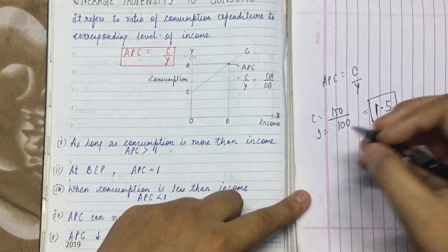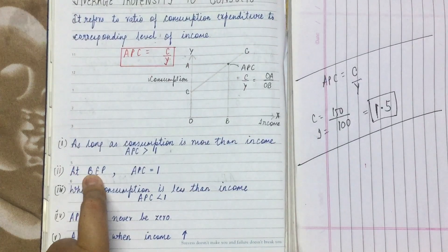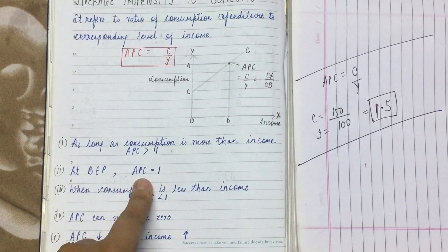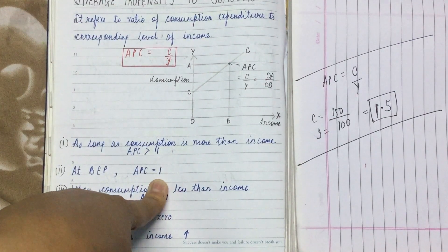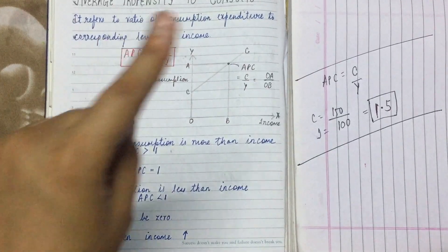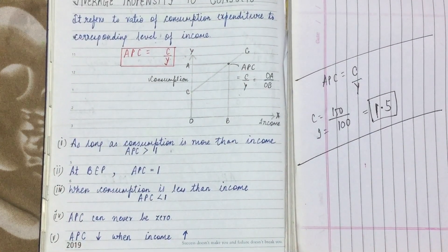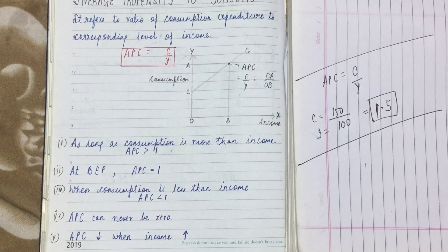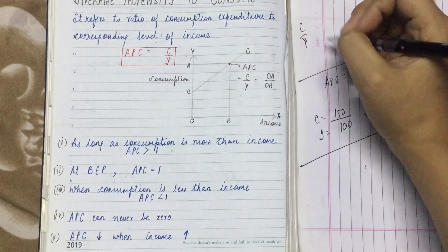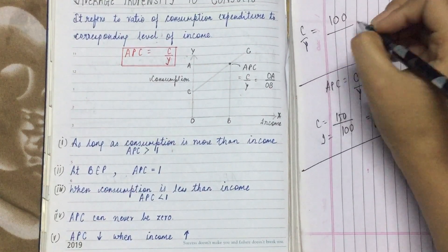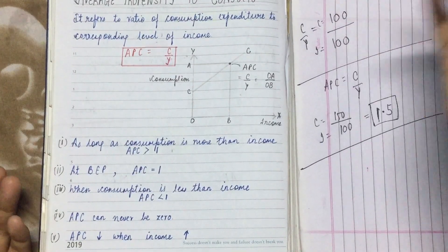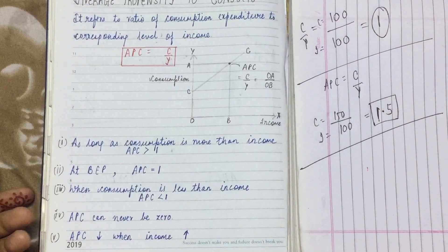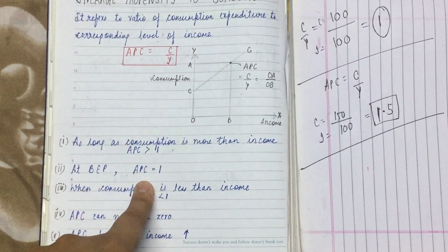Second property: at the Break-Even Point (BEP), APC is equal to 1. At the break-even point, when consumption equals income, APC equals 1. For example, if your income is 100 rupees and your consumption is also 100 rupees, then APC = 100/100 = 1. So at BEP level, APC is always equal to 1.